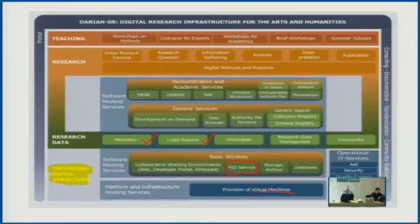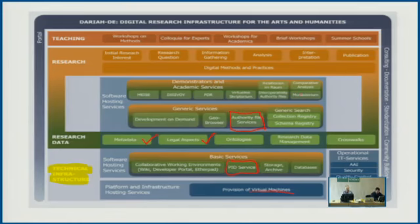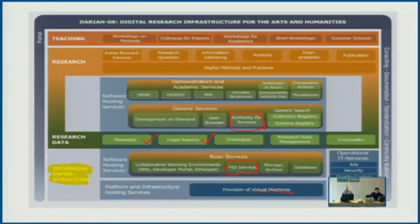In the research layer we have something like authority file services. It's definitely something interesting when talking about metadata, because if you have reliable authority files, you can really make things visible based on information you already know — for example, which person is which, or where are all the places located that are mentioned in a particular text. That was something we showed yesterday with the Fontane project: we were able to put all the places mentioned on a map just by relying on authority files and the annotation we were doing in the edition.